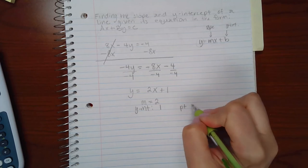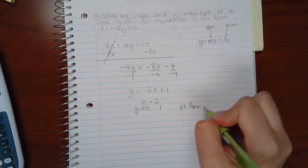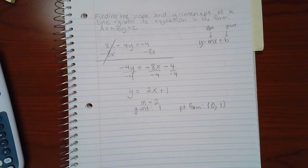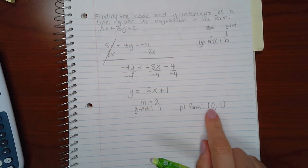If they want it in its point form, then it would be 0 for x and 1 for y. Always 0 coordinate for a y-intercept.